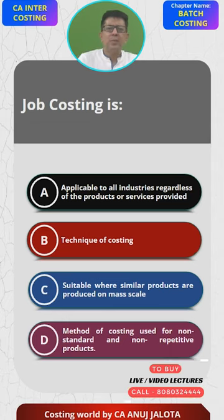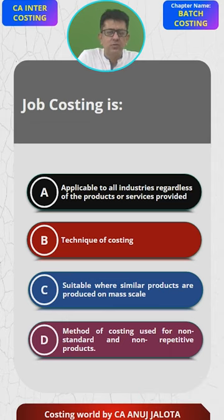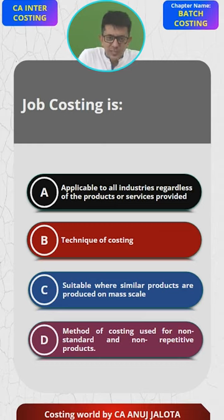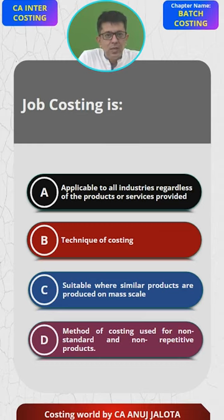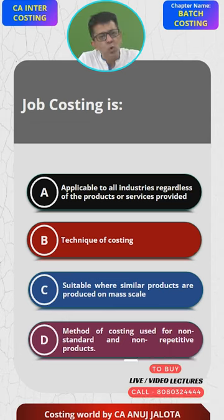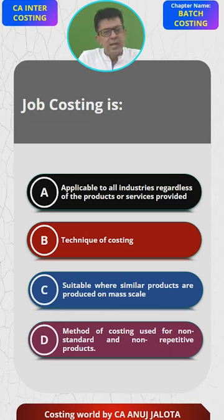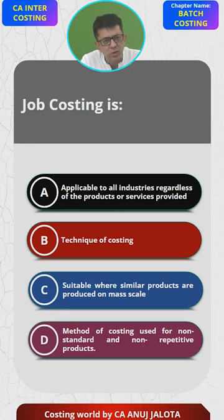Let's study them one by one. First of all, what do you mean by job costing? Job costing is where customers give an order to a company for manufacturing a certain type of article or unit which is completely different. The company then manufactures that product based upon that specification. That is how it works.